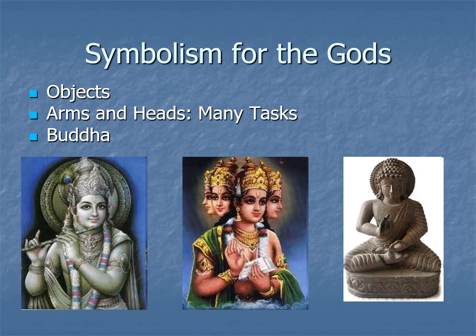India has produced more images of gods than any other polytheistic civilization, with so many gods and such rich symbolism. When you look at these images, one thing you'll notice are the different objects, which allow you to identify which god it is — each object has a particular meaning. Krishna is often depicted with a flute. Shiva often has a crescent moon. Rama has a bow from his story as Narayana, and so he is pictured with this bow.